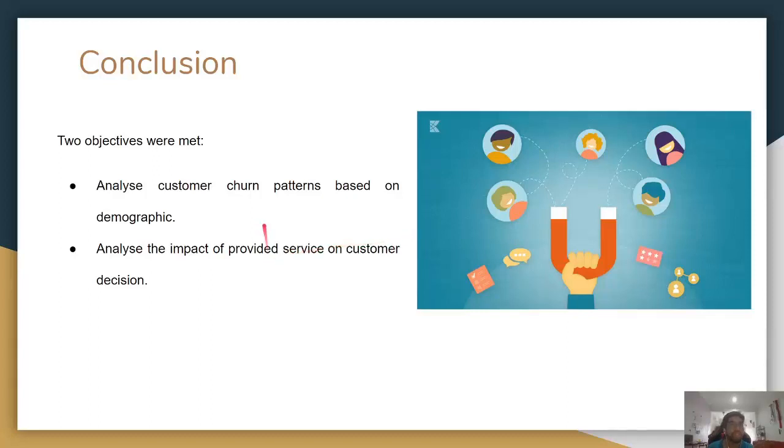To conclude, there were two objectives that have been met. The first one is that we have successfully analyzed customer churn patterns based on their demographics. We see that female and the male, the churn rate generally is the same. As for senior citizen, more senior citizen are churning compared to the non-senior citizen, which means old people are churning more. Other than that, we also see month-to-month contract having a higher churn percentage compared to yearly or two years. And also, the same distribution were observed across the same tenure duration for senior and non-senior customers as well.